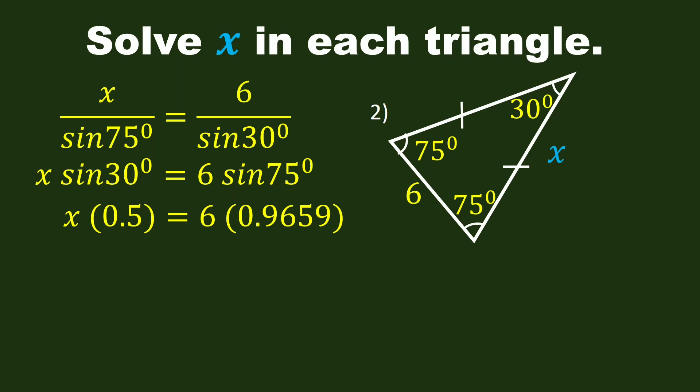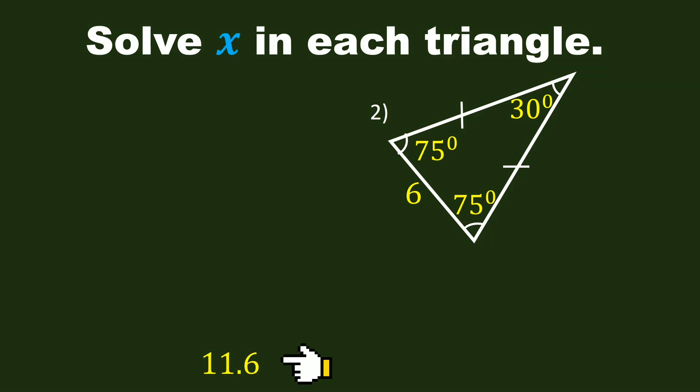6 times 0.9659 is 5.8. Divide both sides of the equation by 0.5. We have X is equal to 5.8 over 0.5. Finally, X is equal to 11.6. We have solved X.